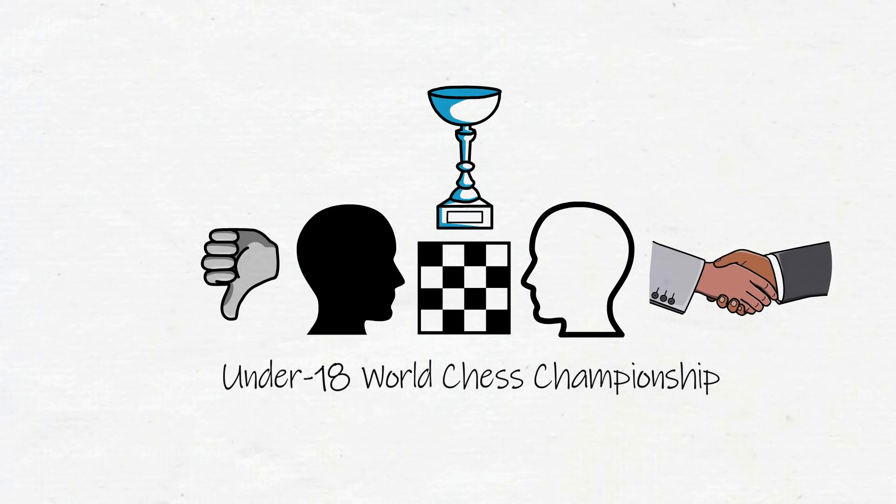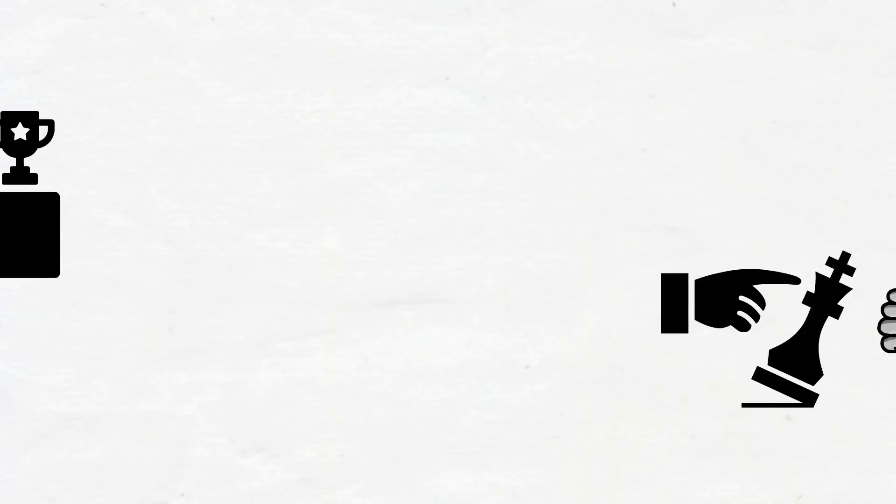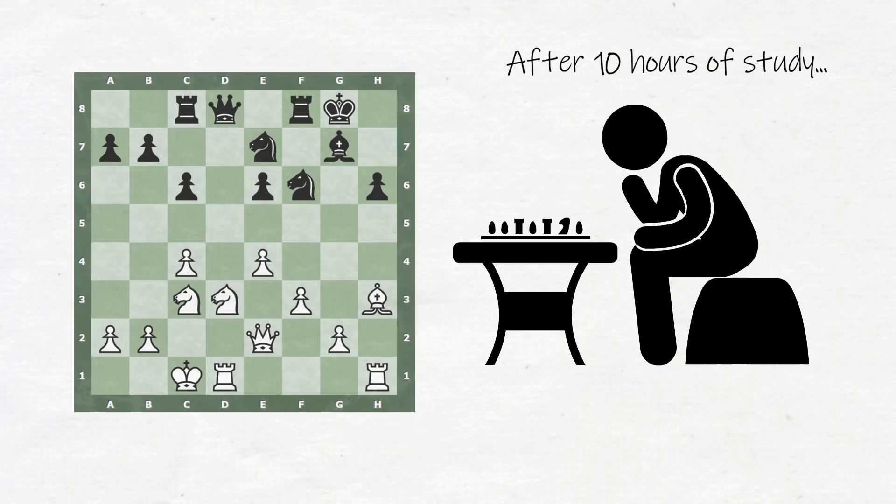Soon after declining the draw, his position fell apart and he lost the match. Josh was heartbroken, but he used his pain as fuel to intensely study the game he'd just lost. After 10 hours of study, he uncovered a critical strategic error.